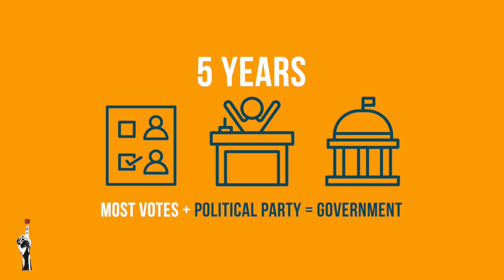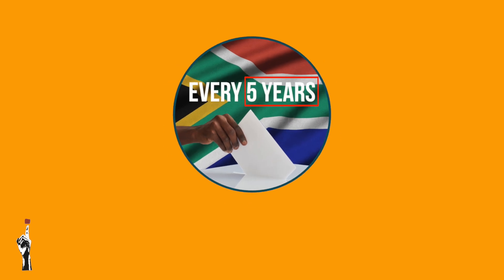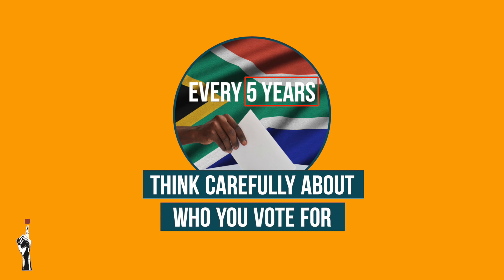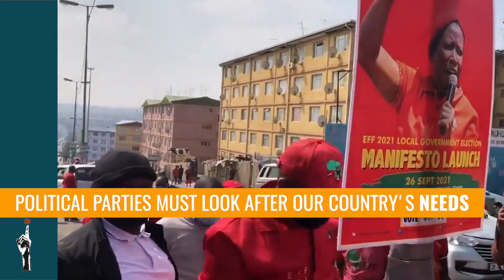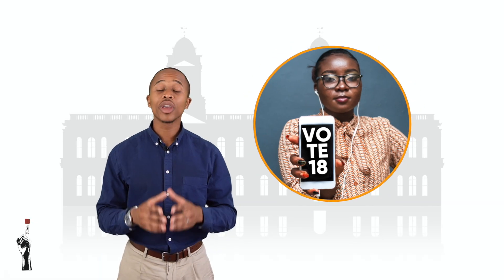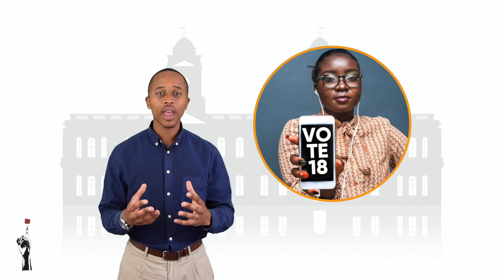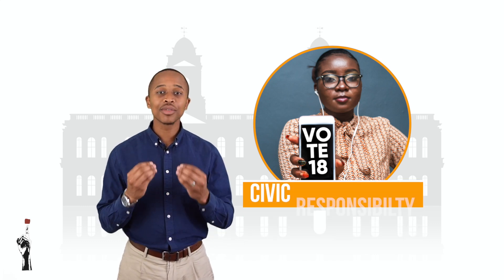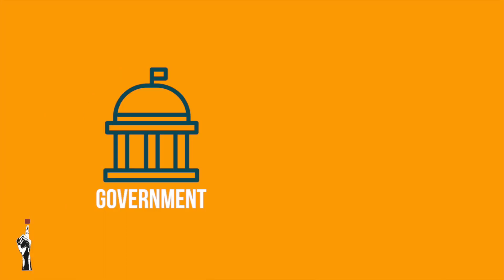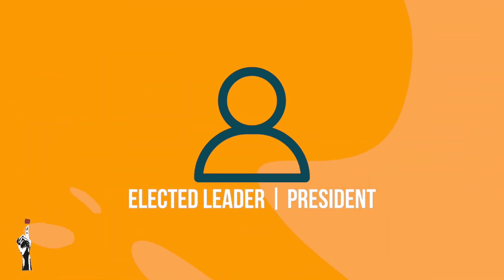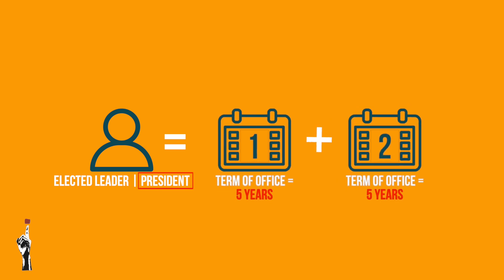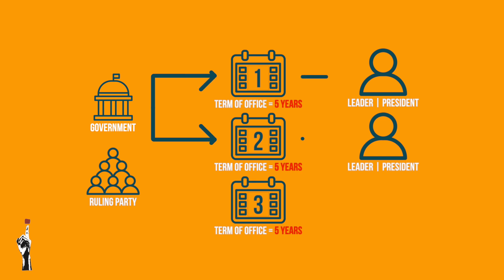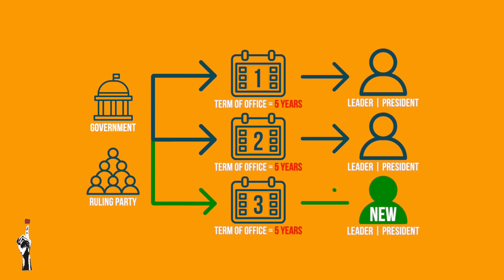The party that gets the most votes is the ruling party for the next five years. It is very important that when we go to the voting stations we think carefully about our decision. When you turn 18 you can vote too, and I strongly encourage you to vote. Our country has many challenges, and as I like to say: if you don't vote, you can't complain. It is our civic responsibility to vote. The ruling party's elected leader can only serve for two terms of office.